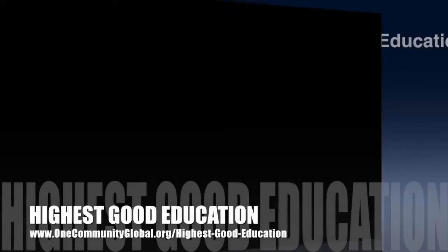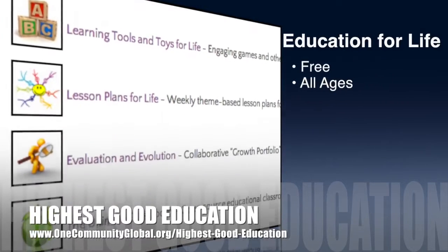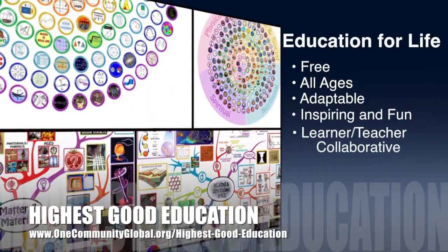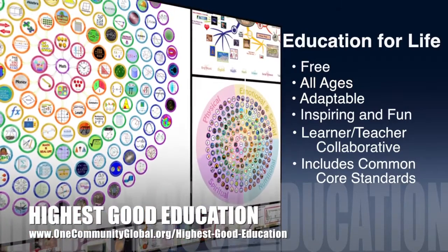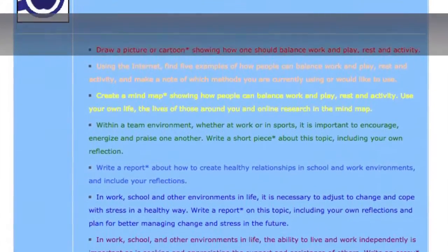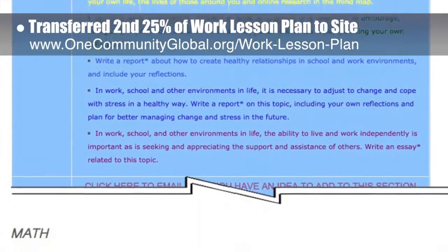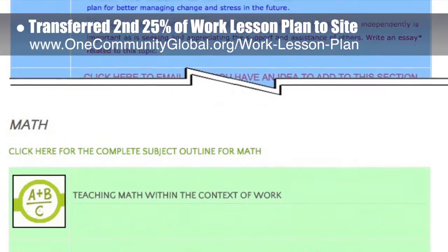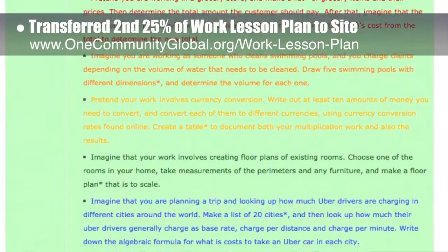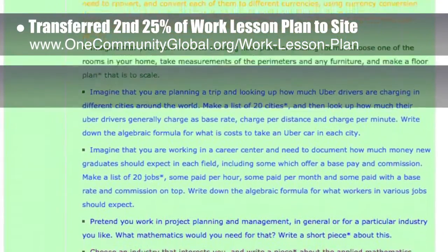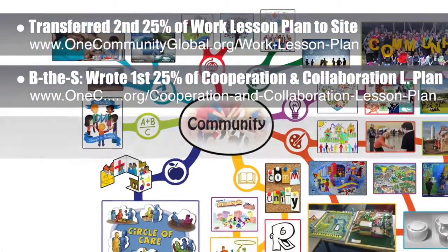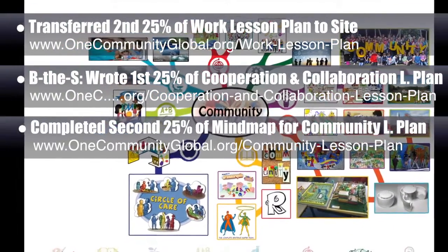One Community's approach to highest good education is open source and free shared, designed for all age groups, adaptable to any schooling environment, inspiring and fun for all participants — a learner, teacher, collaborative model that includes U.S. common core standards. This week, the core team transferred the second 25% of the written content for the Work lesson plan to the website. This lesson plan is purposed to teach all subjects to all learning levels in any learning environment using the central theme of work. Behind the scenes, we wrote the first 25% of the written part of the Cooperation and Collaboration lesson plan, and also completed the second 25% of the mind map for the Community lesson plan.